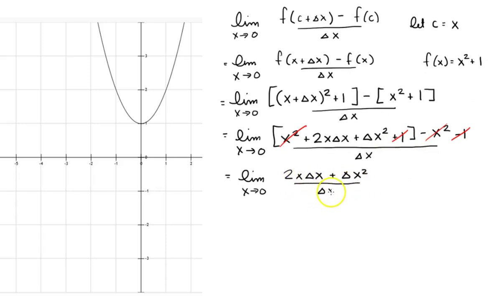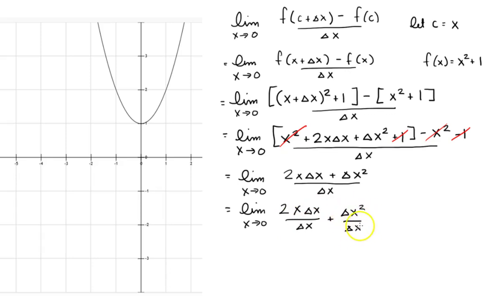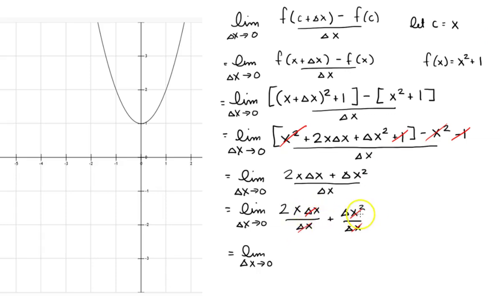After more canceling — and by the way, I kept mistakenly saying 'as x approaches 0' but it should be 'as delta x approaches 0' — I'm left with the limit as delta x approaches 0 of 2x plus delta x. As delta x approaches 0, I'm left with the function 2x. So f prime of x equals 2x.